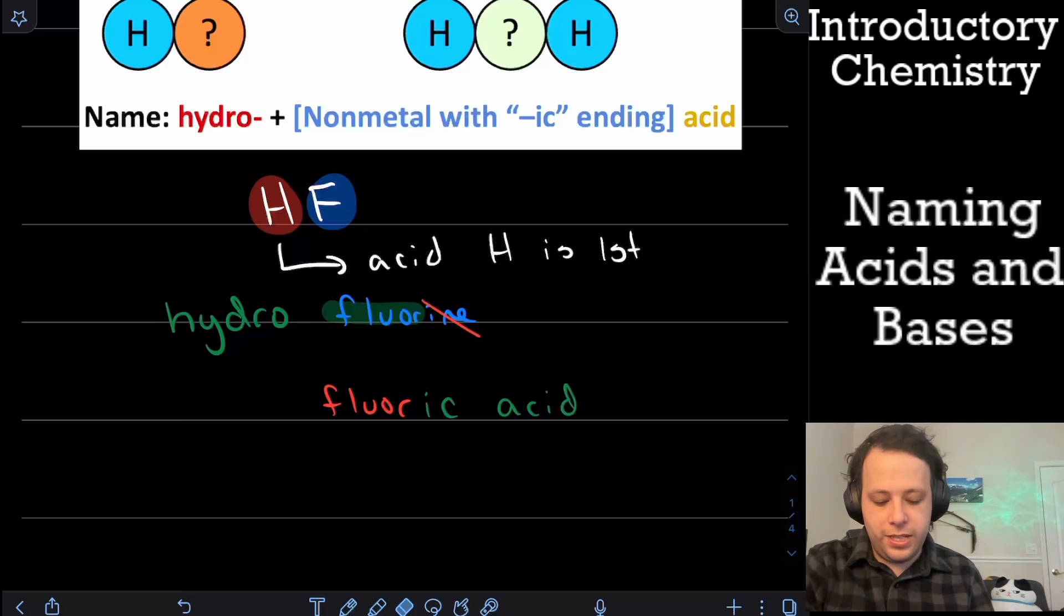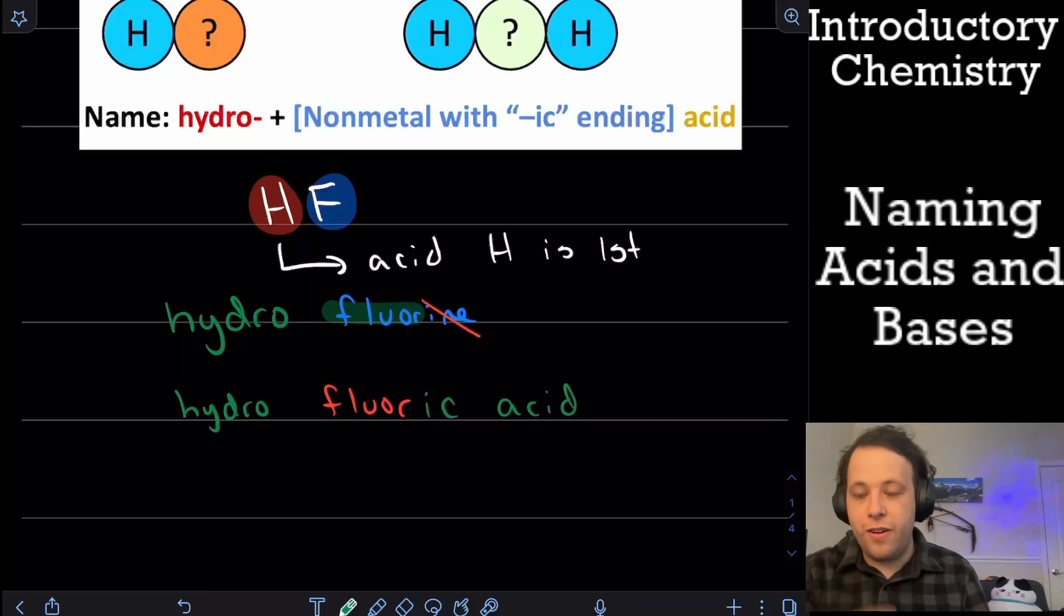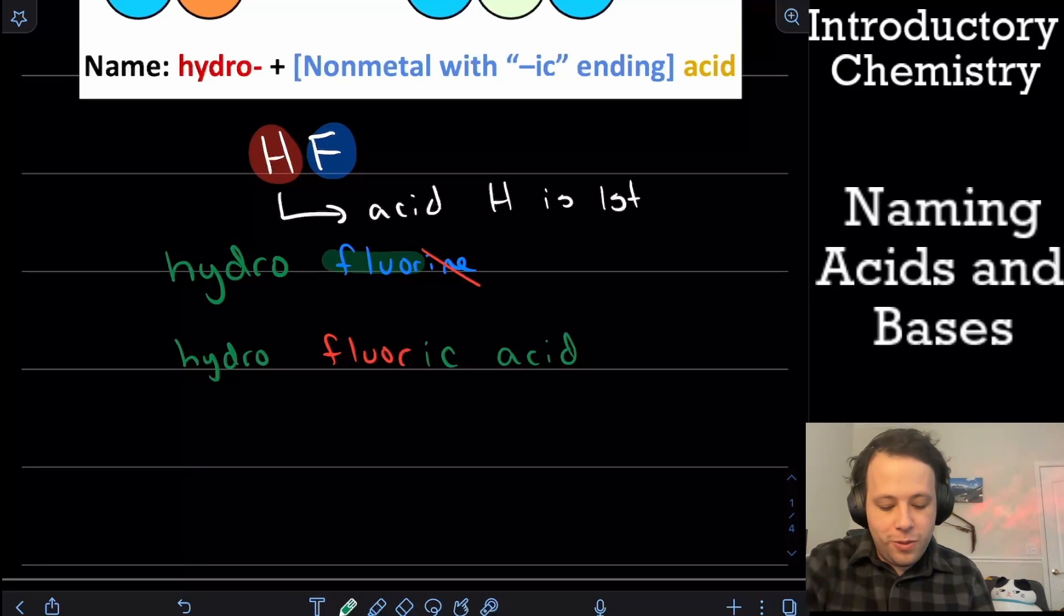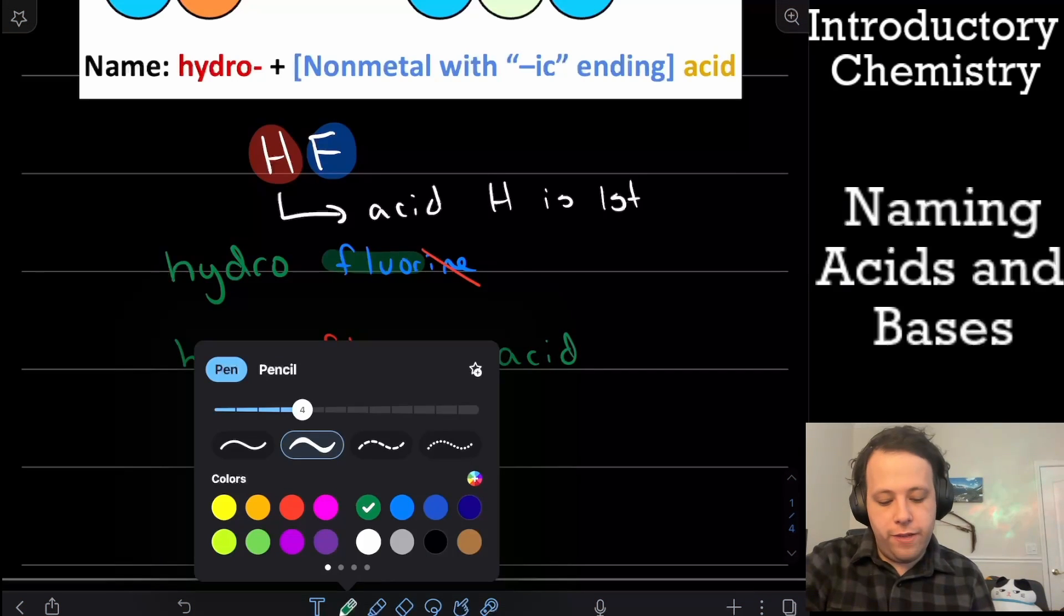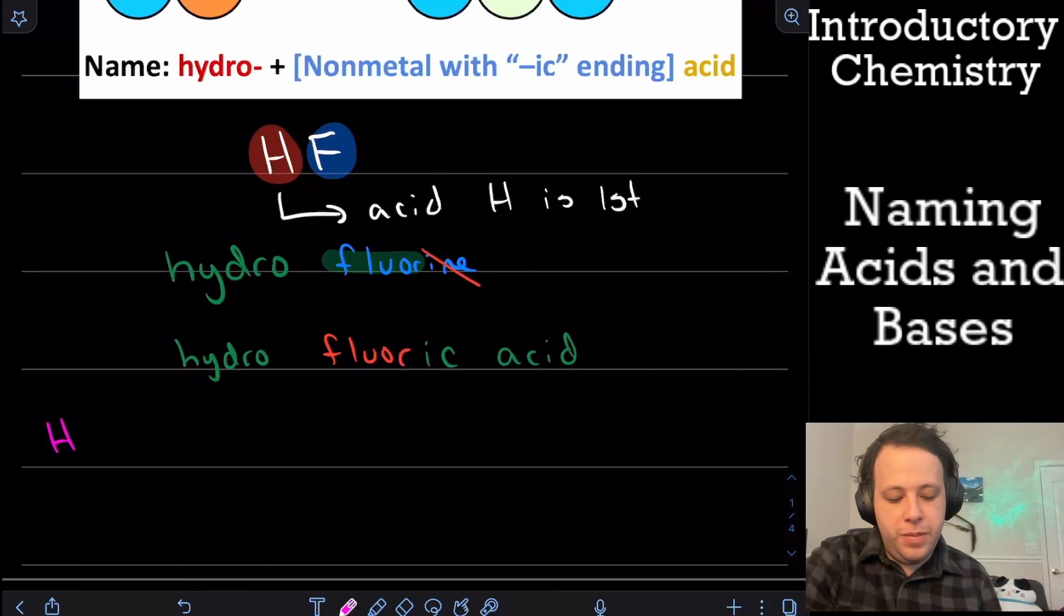So when we write that down again, it's going to be hydro fluor, and we're going to be replacing the ending with ic acid. So with this, just to kind of show off that entire naming here. So we have hydro and ic acid are the parts that we got to write for any of these different structures. So if we were going to do another one, for example, what if I gave you HBr?